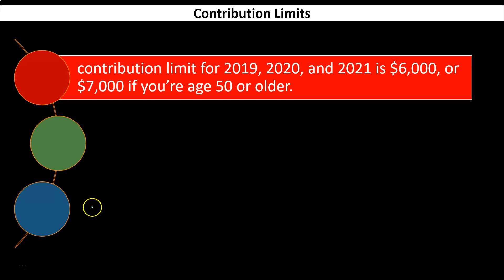Contribution limits for 2019, 2020, and 2021: $6,000, or $7,000 if you're age 50 or older. If you're single and don't have access to another plan, you can put up to $6,000 in and get a tax deduction. If married, both individuals could each put in $6,000 for a joint benefit of $12,000. The $7,000 catch-up is available for those 50 or older because the IRS recognizes they're closer to retirement and may need to contribute more to reach their savings goals.